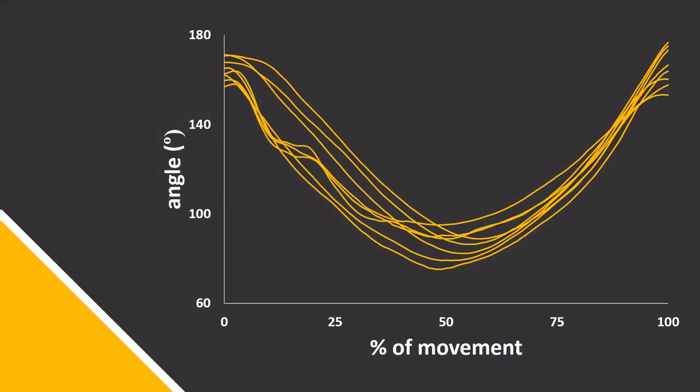Once the trials have been time normalized, it's common to report the mean time series. However, caution is required when extracting peak values for hypothesis testing. If the peak occurs at a different time point for each trial, then it may be appropriate to extract the peak from each individual trial before averaging those values instead.